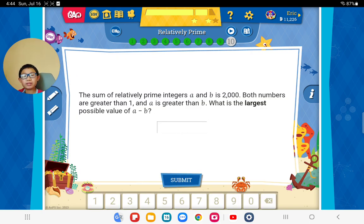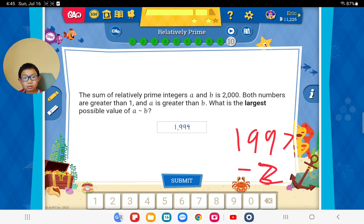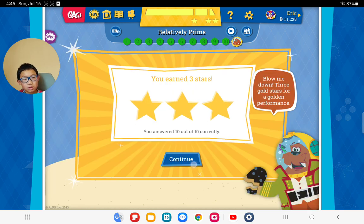The sum of relatively prime integers a and b is 2,000. Both numbers are greater than 1, and a is greater than b. What is the largest possible value of a minus b? What greater it means should be as large as possible, yes? This is 2. Minus 2. Yeah. What minus 2? No, no, no, that's 1, that's 1. What about 1,997 and 3? Yes. So it's 1,994. Good job, very good job. Good, good, good. Okay.